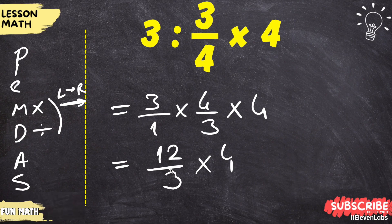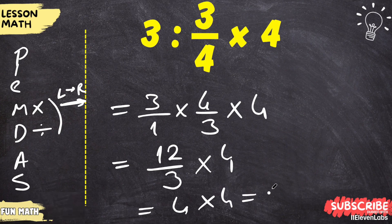Now you can do the division here. If I divide 12 by 3, it makes 4. 4 times 4 gives us the result of 16.